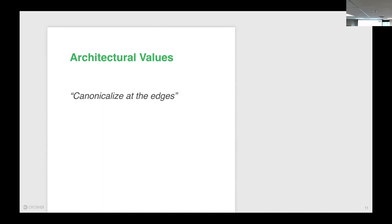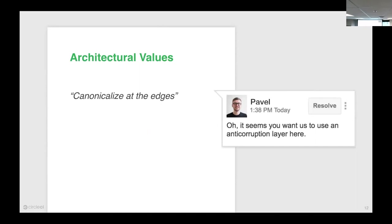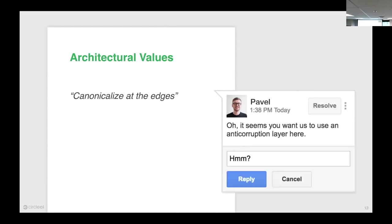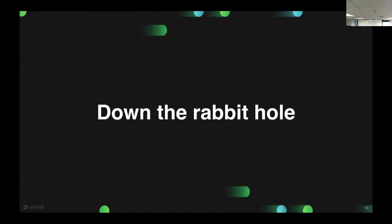I said we should probably do something differently — this doesn't feel quite right. Pavel, one of the engineers reviewing these documents, left a comment saying: 'Oh, it sounds like what you want to use here is an anti-corruption layer.' Obviously I thought, hmm, what's this guy talking about? But I didn't actually hit reply — I did what every senior engineer would do, which is go Google it and try to figure out what he was talking about on my own. And so I discovered the entire world of domain-driven design.